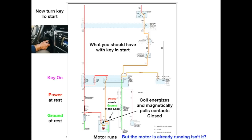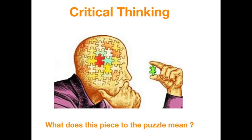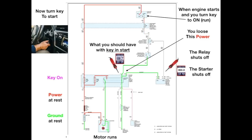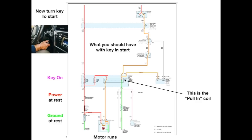Critical thinking — the motor is already running. What does this piece of the puzzle tell you? Well, when the engine starts and you turn the key back to the run or on position, you lose this power. The relay shuts off and the starter shuts off. So this is what we call a pull-in coil, and this is what we call a hold-in coil. Why do we have both? It takes a lot more amperage to pull a contact closed than it does to keep it closed — but that's really another topic we can cover another day.